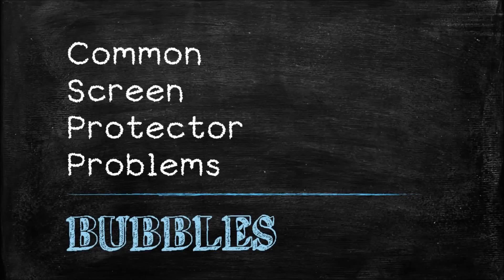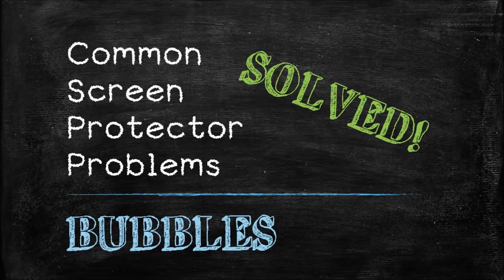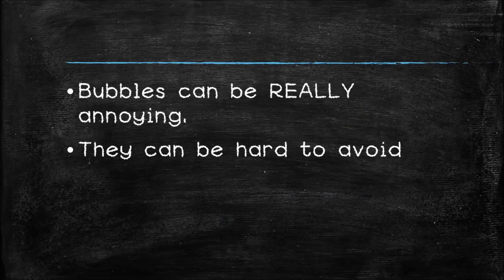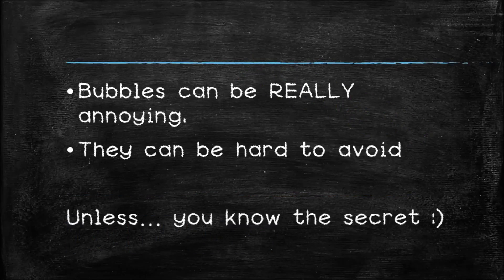Common screen protector problem solved: bubbles. Bubbles between your iPhone's glass and your screen protector really can be annoying. It can also be very difficult to avoid unless you know this little secret I'm about to tell you.